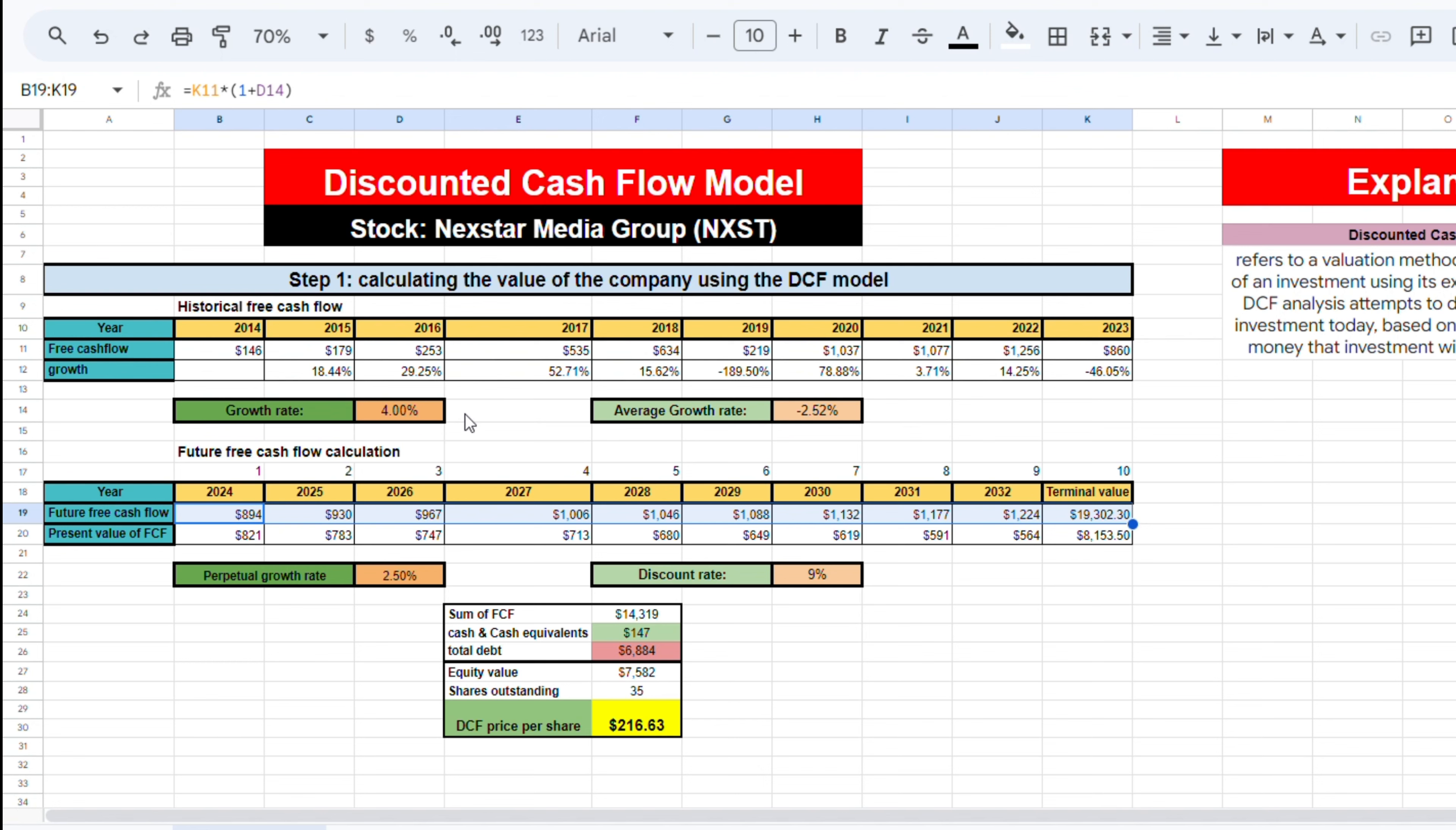For the terminal value, we made use of the discount rate of 9% and the perpetual growth rate of 2.5%, which is usually the rate the economy grows at. Now that we have the future free cash flows, we add them all together. By adding up the cash and cash equivalents and subtracting the total debt, we find the equity value. Dividing this by the total amount of shares outstanding gives us the price per share of $216.63 based on this method.